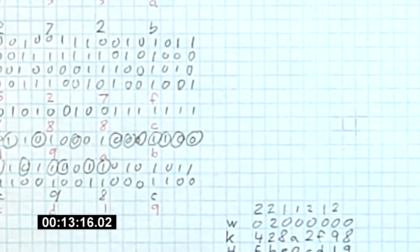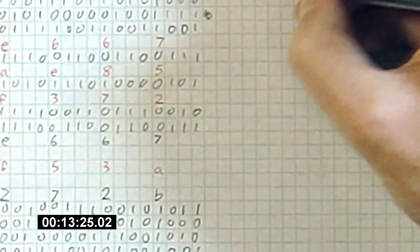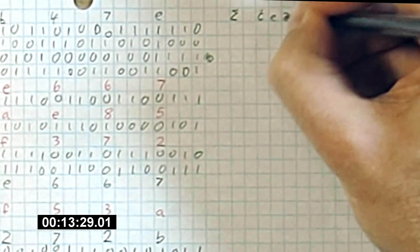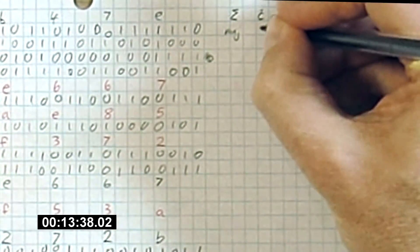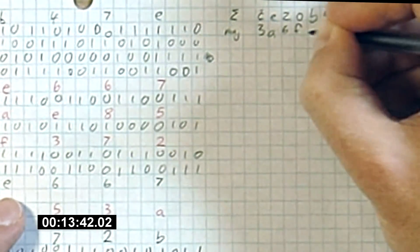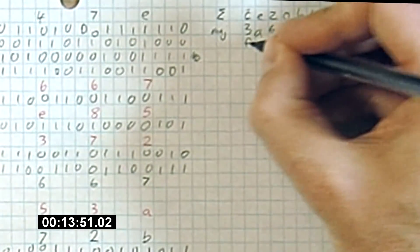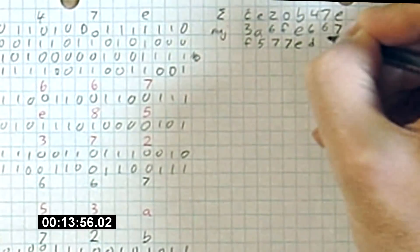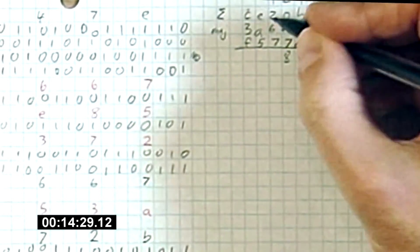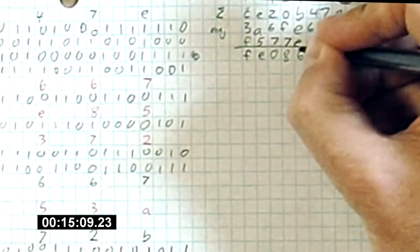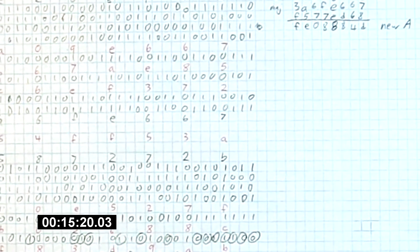Next, we go up to compute our new A value. We add three things here. We start with the sum we computed earlier, which was CE20B47E. And we take the majority value we calculated from A, B, and C. That's 3, A, 6, F, E, 6, 6, 7. And finally, we take our previous sum, which is F5, 7, 7, E, D, 6, 8. And we just add these up in hexadecimal. So now this is our new A value. So after all this work, we've calculated one of our new values for the output.